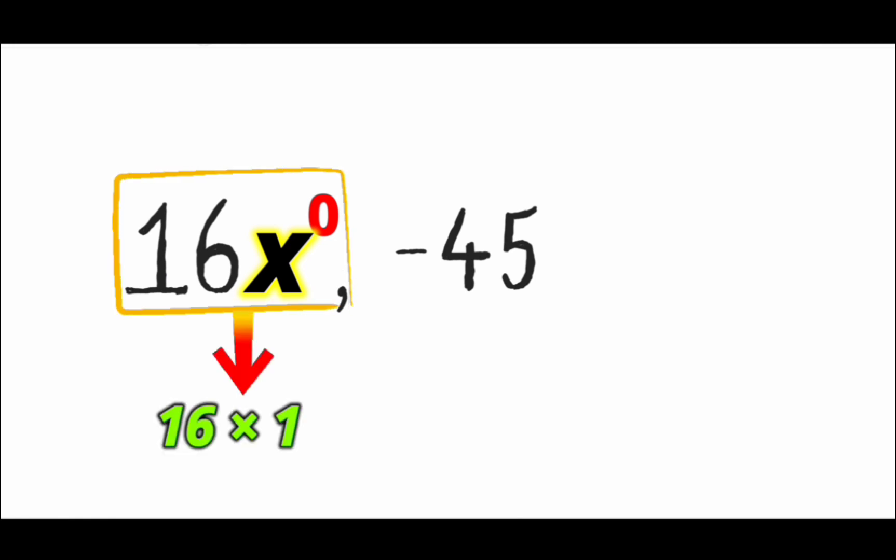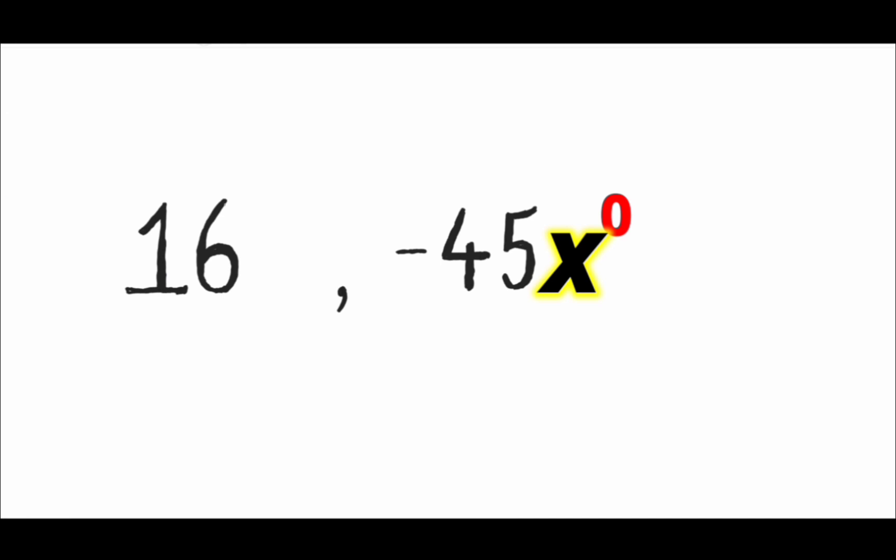Similarly, -45 can be written as -45x⁰, which is just -45. We can understand through this that all constants have the same variables and their powers are also the same, that is 0. Ultimately, constant terms are like terms.